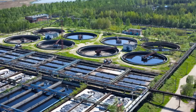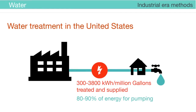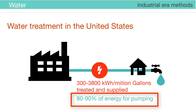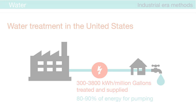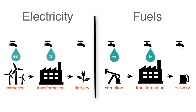In developed countries, water and energy use can be closely connected, especially if processes rely on industrial-era methods. For example, in the United States, every million gallons of treated water delivered requires 300 to 3,800 kilowatt-hours of electric energy. Eighty to ninety percent of this energy is used simply for pumping the water.